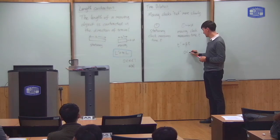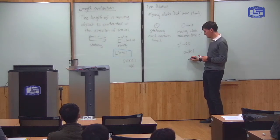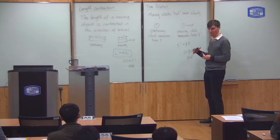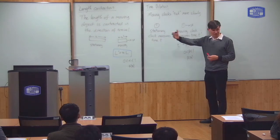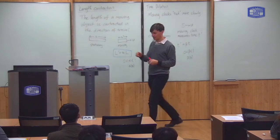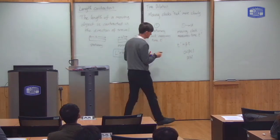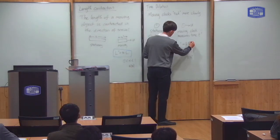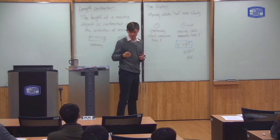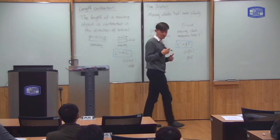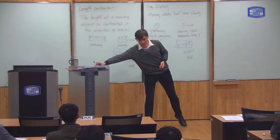Where again beta is something between 0 and 1, and beta is a function of the speed of the clock. So that defines what we mean by time dilation.